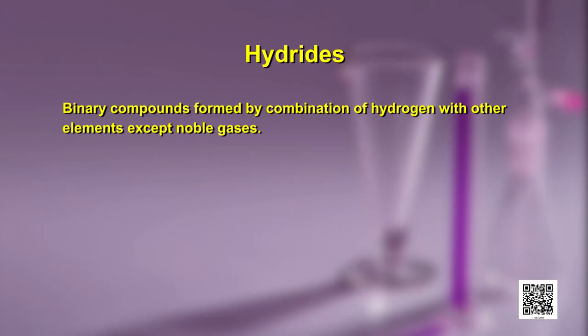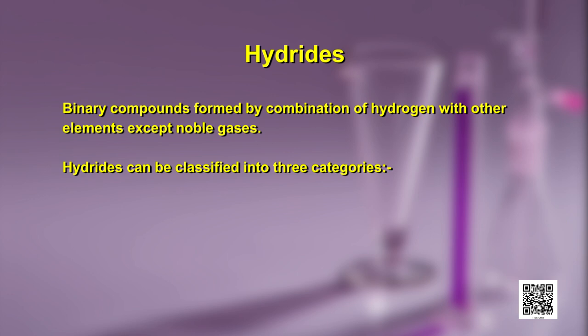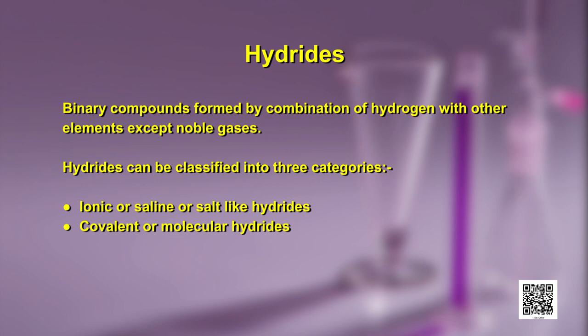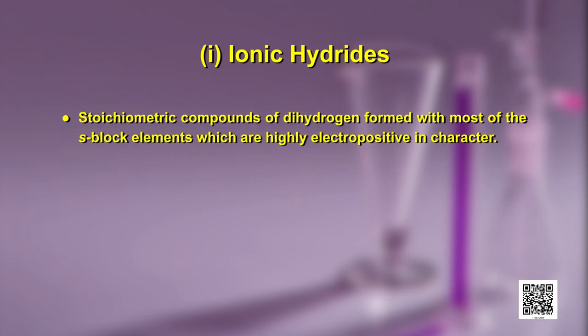Hydrides are binary compounds formed by combination of hydrogen with other elements except noble gases. Hydrides can be classified into three categories: ionic or saline (salt-like) hydrides, covalent or molecular hydrides, and metallic or non-stoichiometric hydrides. Ionic hydrides are stoichiometric compounds of dihydrogen formed with most s-block elements, which are highly electropositive in character.